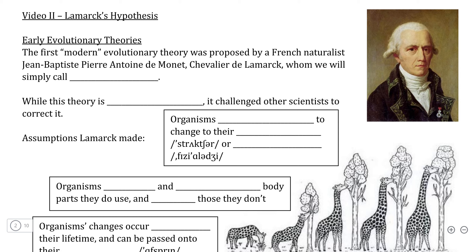Before we take a look at the principles of the Darwinian model of evolution, we're going to look at the principles of an earlier evolutionary theory put forward by the French naturalist Jean-Baptiste Pierre-Antoine de Monet, Chevalier de Lamarck — which we will, for the sake of simplicity, just refer to as Lamarck — and his model would be the Lamarckian model of evolution.